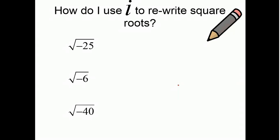Now, how do you use i to rewrite square roots? If I have the square root of negative 25, I can rewrite this as the square root of negative 1 times the square root of 25, right? Because negative 1 times 25 gives me negative 25. Well, the square root of negative 1, that's just i.